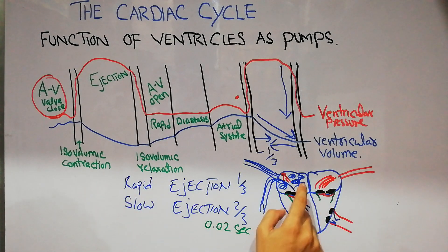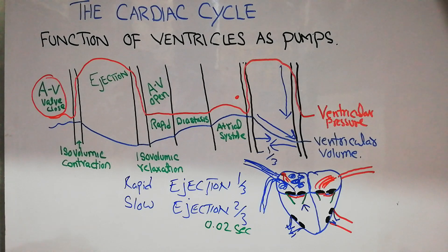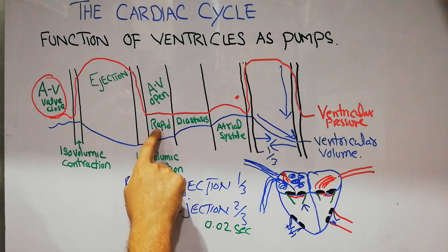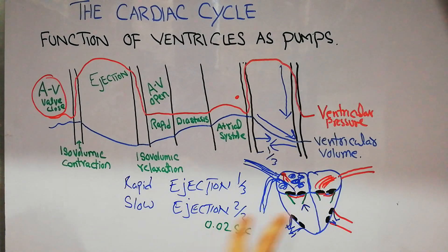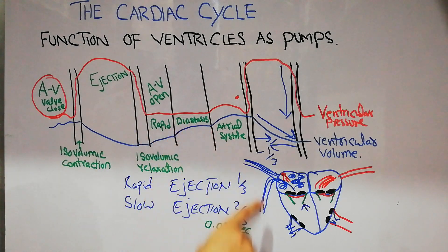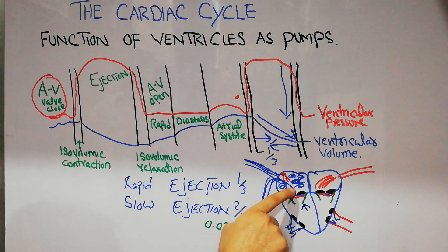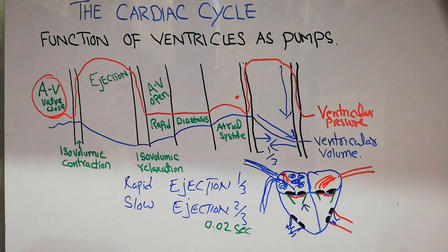After isovolumic relaxation, the pressure decreased enough that blood in the atria could push open the valves and blood started flowing into the ventricle. This ventricular filling occurred in three steps: rapid filling (blood already in the atria came directly into the ventricles), then diastasis (blood returning through the veins directly entering the ventricles), and finally atrial systole (contraction of the atria pushing the remaining blood into the ventricles).